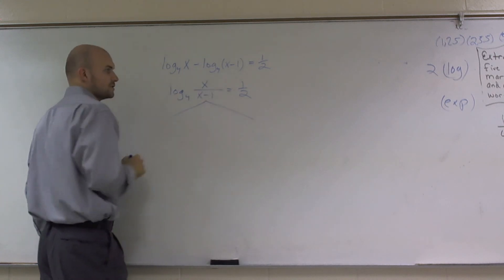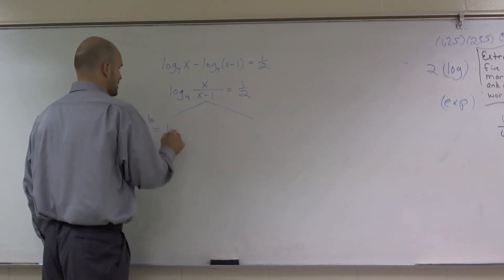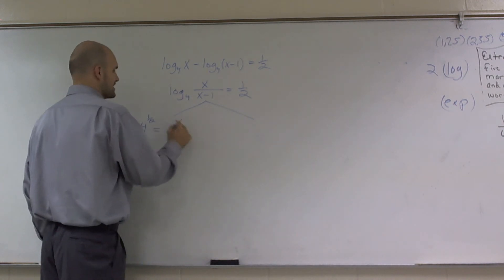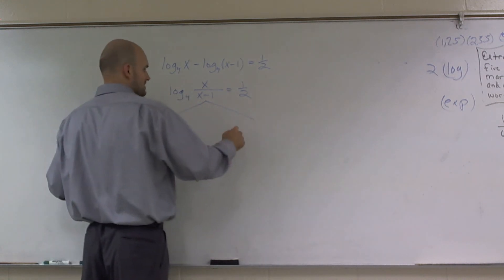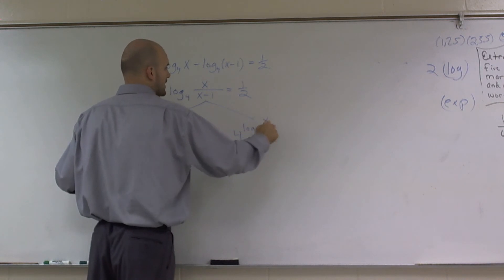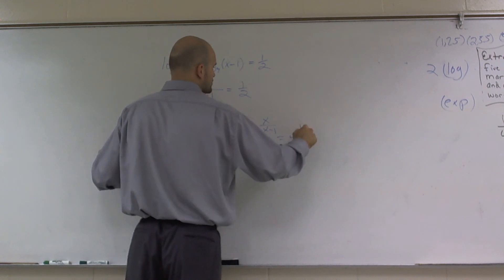I could, one, transfer it to logarithmic form, which would be 4 raised to the 1 half equals x over x minus 1. Or what we could also do is I could use my one-to-one properties and say 4 of log base 4 over x times x minus 1 is equal to 4 to the 1 half power.